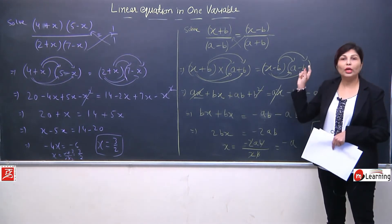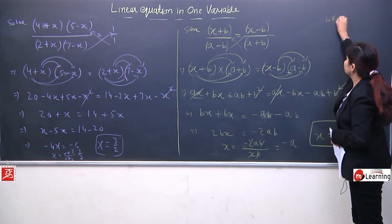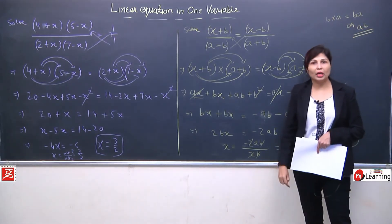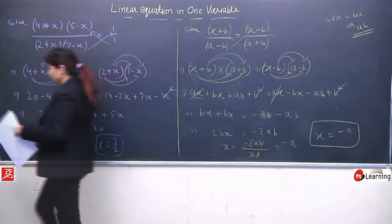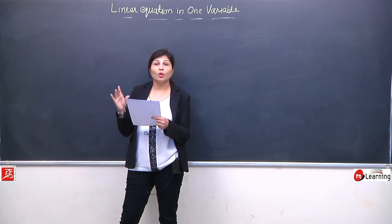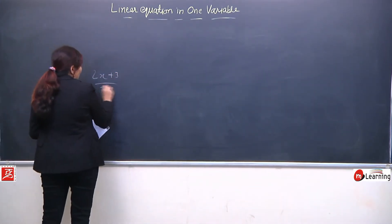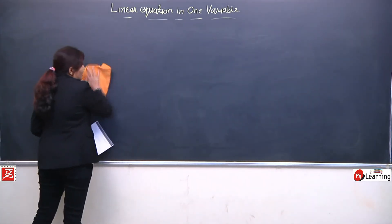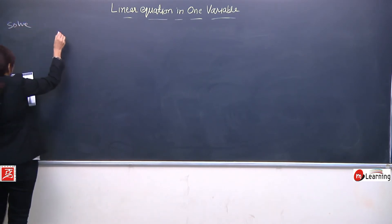Question simple tha but sara question alphabetical form mein tha — ek bhi number nahin tha, toh multiplication mein thoda dhyan rakhna tha. Jab bhi hum b ka multiply a se karein — ba aur ab same hain — toh aap koshish karein ki alphabetical form mein likhein. So ye the saare aapke cross multiplication ke questions. Now another good one — abhi tak jo diya tha woh sab linear form mein tha, variable ki highest power 1 thi.